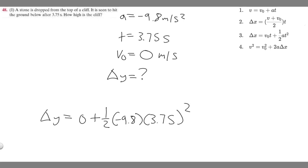Now we can just solve. 3.75 squared is going to be 14.0625, and then you're going to multiply one half times minus 9.8, which is just minus 4.9. So minus 4.9 times 14.0625 is going to give you minus 68.90625.